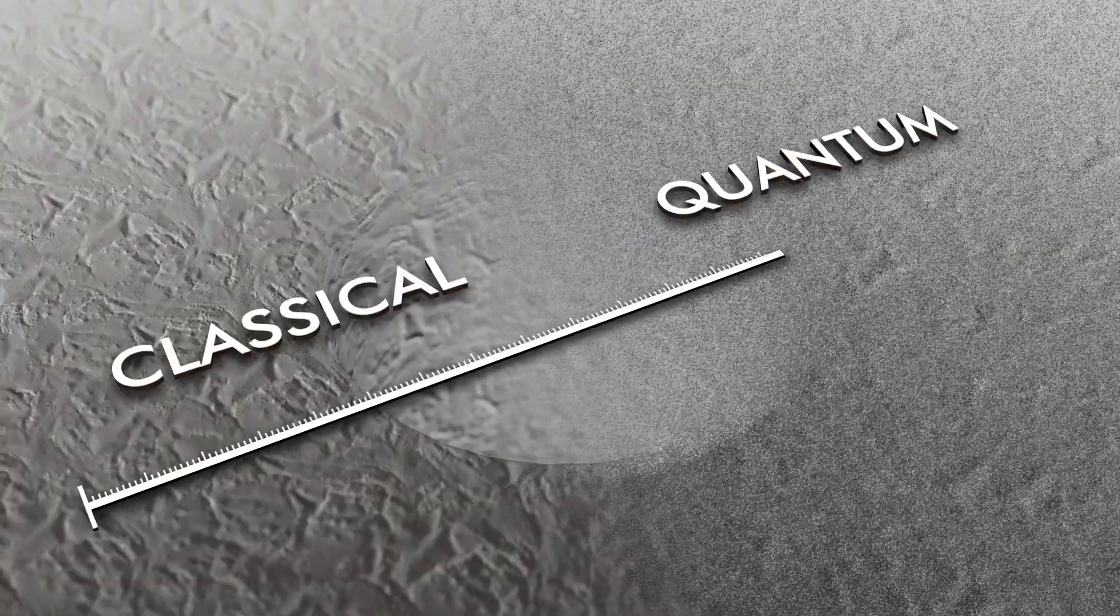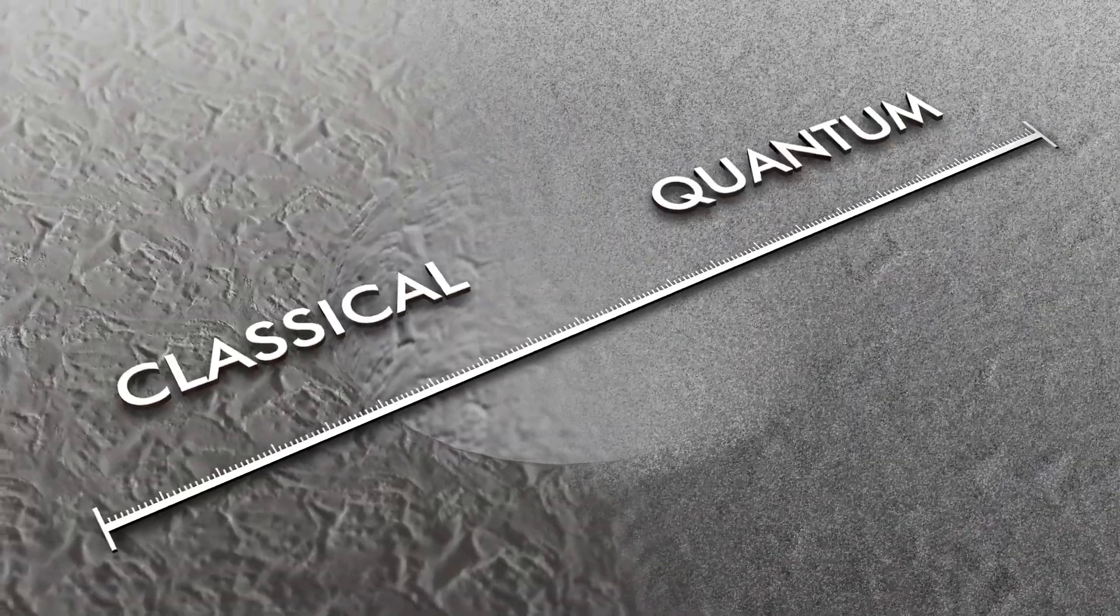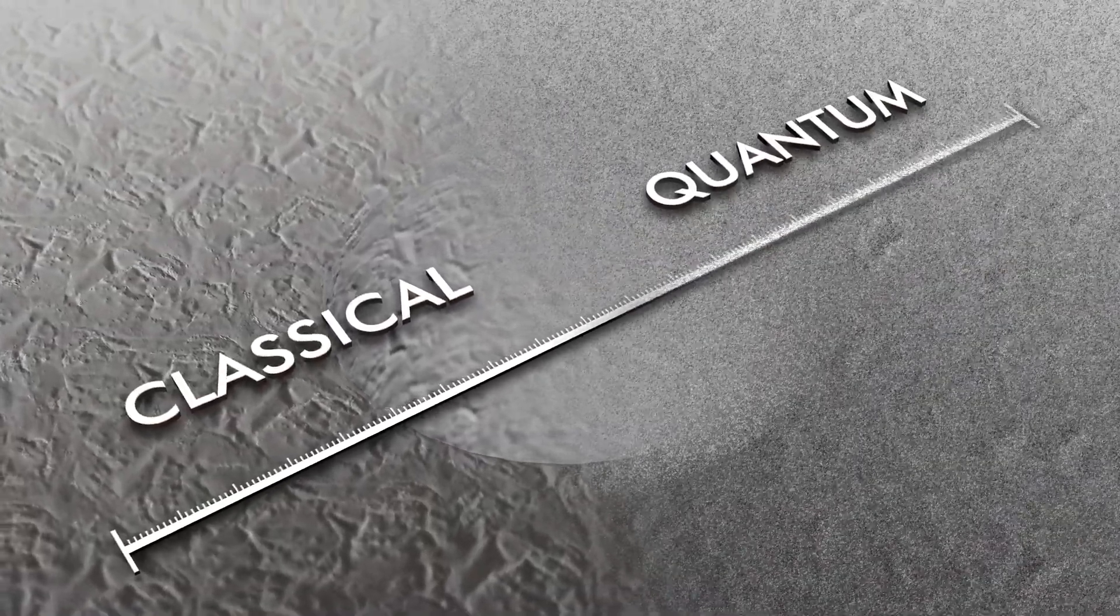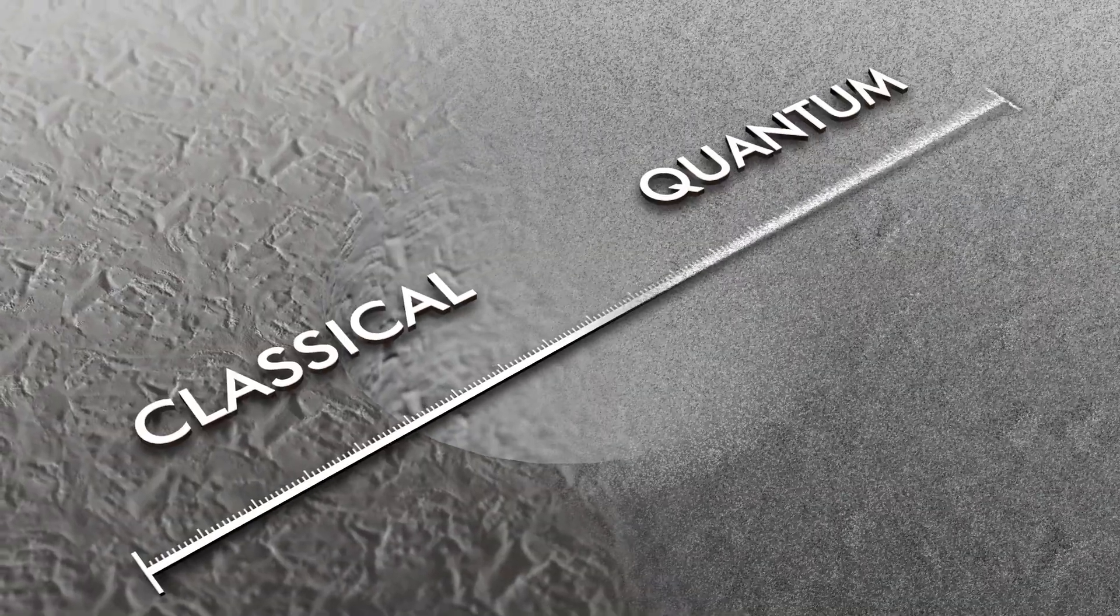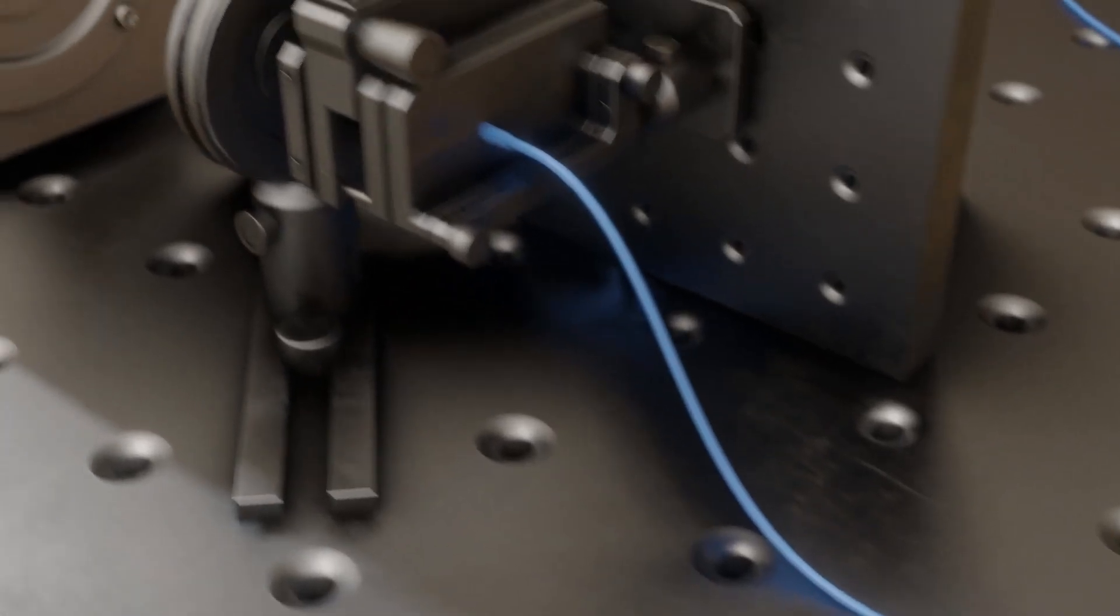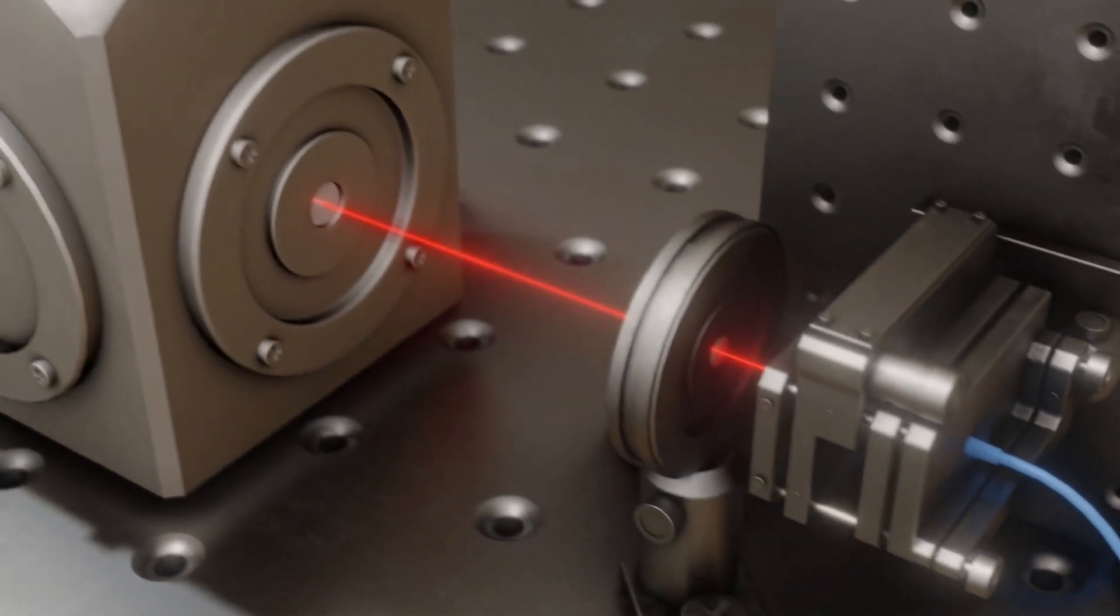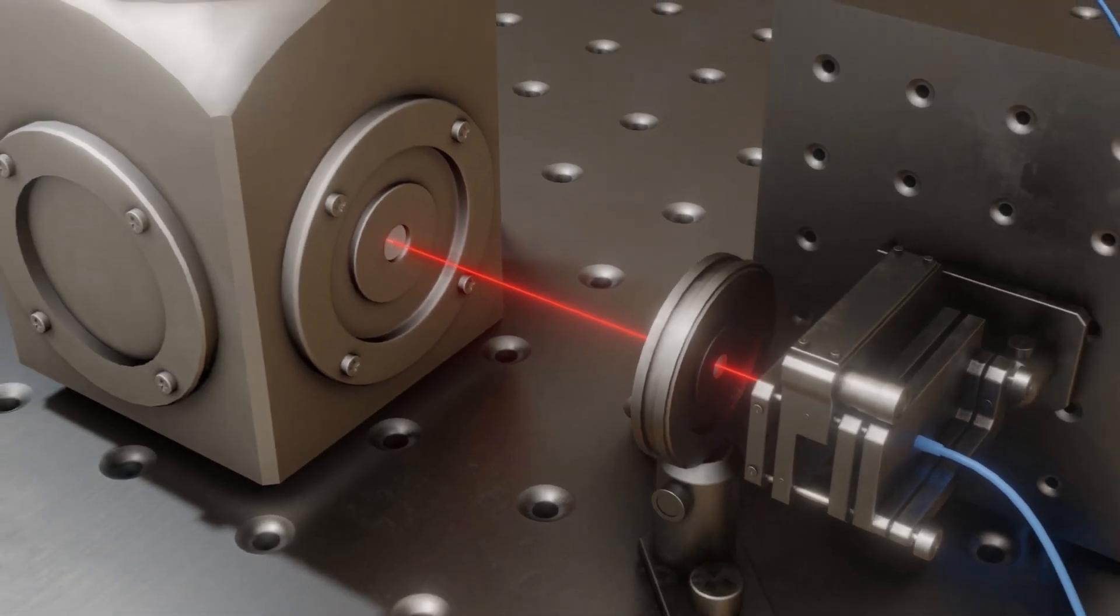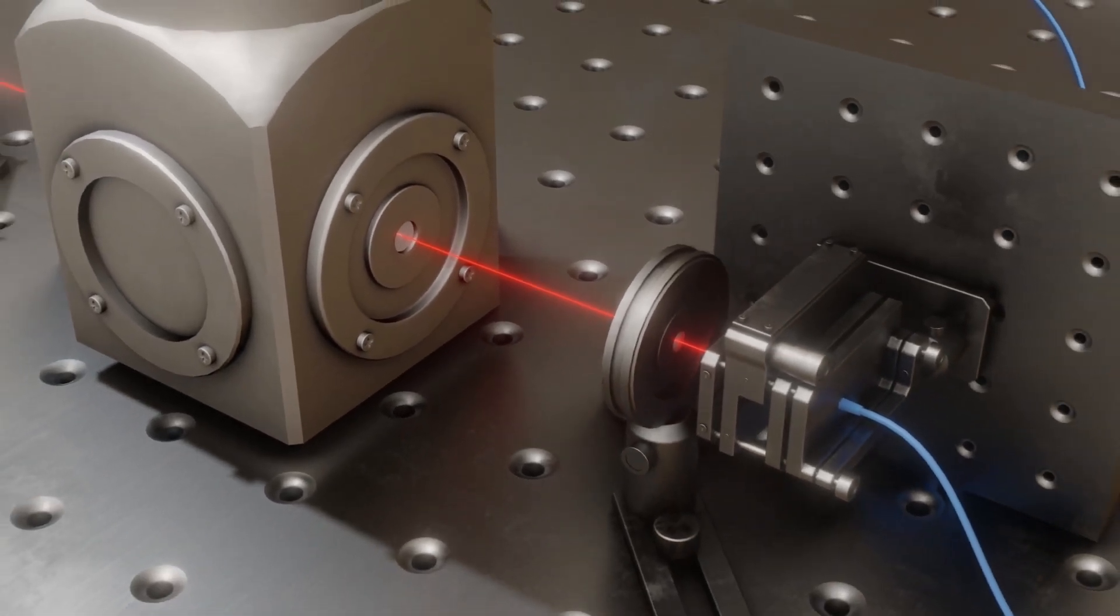Extremely precise technologies are emerging that must be described by quantum physics. A central idea in quantum physics is that any measurement disturbs the system being measured. The hybrid optomechanical technologies network, HOT, is developing new technologies for sensing and signal processing based on the interaction of light with moving objects.